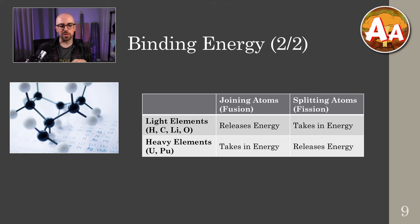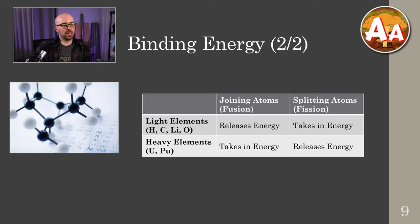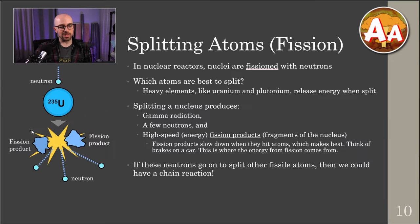To summarize: you use light elements for fusion and heavy elements for fission. This is why it's called a hydrogen bomb — you're using hydrogen to do fusion — and a fission bomb uses uranium or plutonium. Now let's get into splitting atoms.